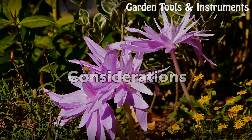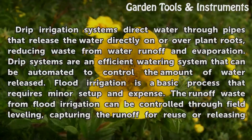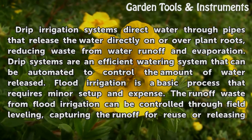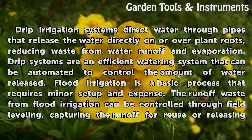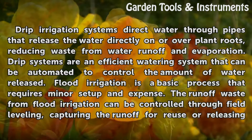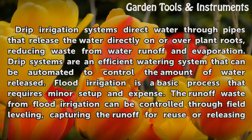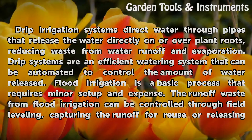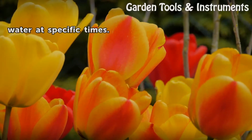Considerations. Drip irrigation systems direct water through pipes that release the water directly on or over plant roots, reducing waste from water runoff and evaporation. Drip systems are an efficient watering system that can be automated to control the amount of water released. Flood irrigation is a basic process that requires minor setup and expense. The runoff waste from flood irrigation can be controlled through field leveling, capturing the runoff for reuse, or releasing water at specific times.